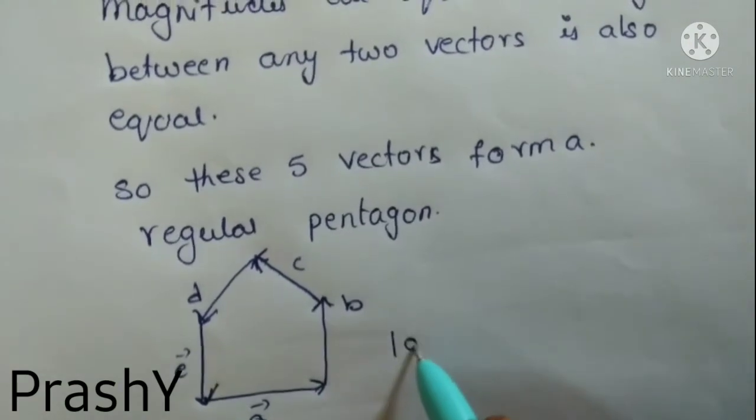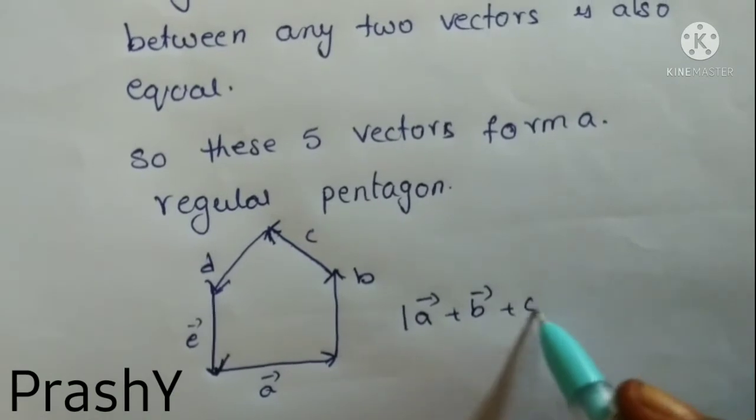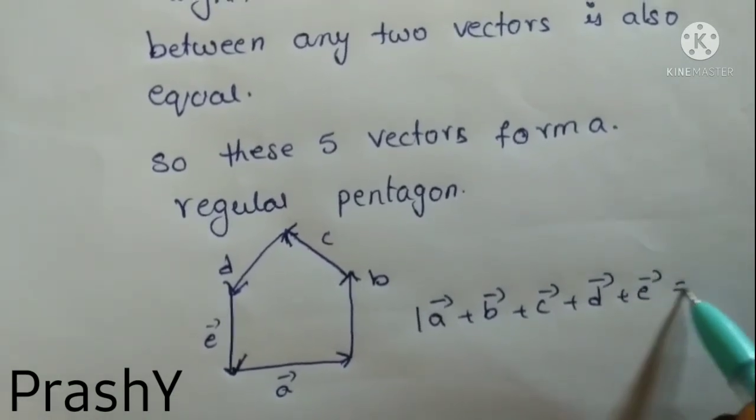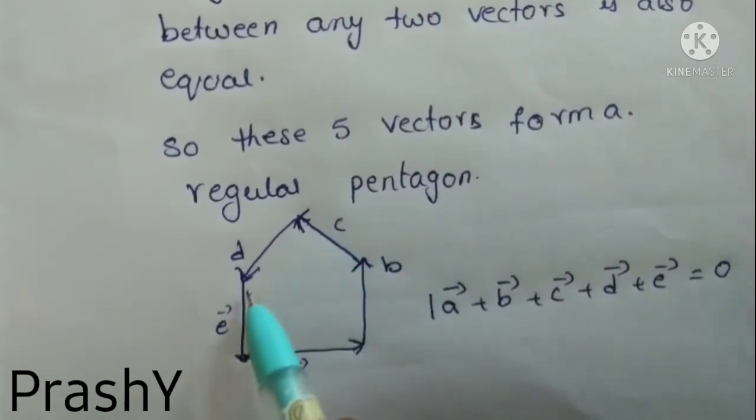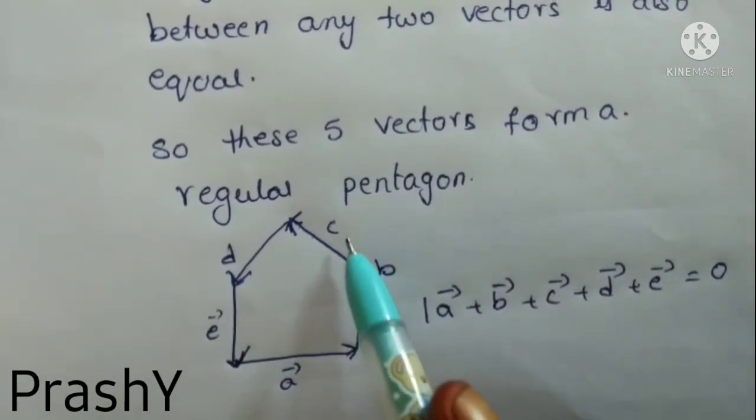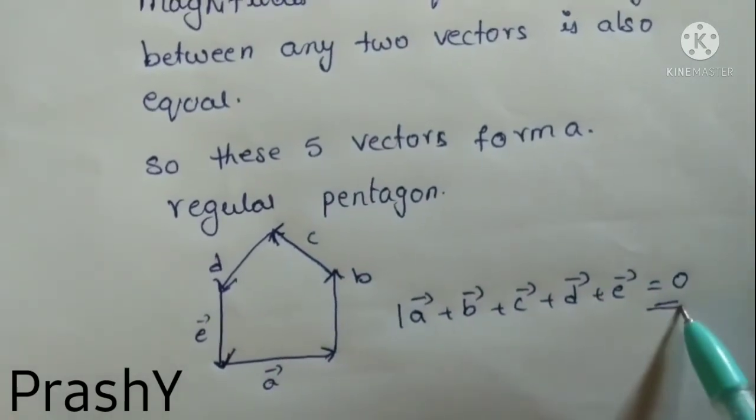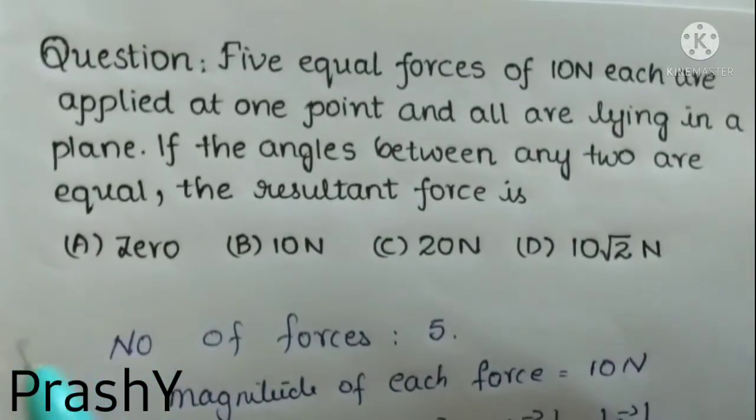If all are moving in cyclic order, then A bar plus B bar plus C bar plus D bar plus E bar will equal zero. When vectors are moving in cyclic order, the resultant equals zero. So our option is option A, that is zero.